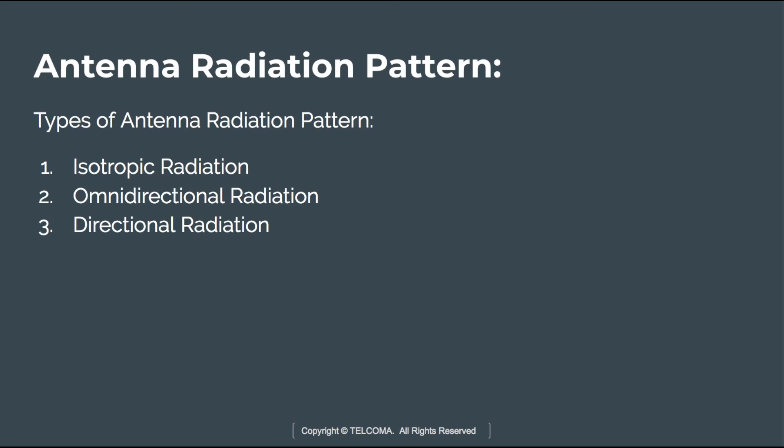Omnidirectional radiation refers to antennas which radiate much more effectively in some directions than others. The term is applied to antennas whose directivity is much higher than that of a half-wavelength dipole. Directional radiation is an antenna which has a non-directional pattern in a given plane, meaning it only emits radiation in the particular direction it is facing. These are the three types of antenna radiation patterns.